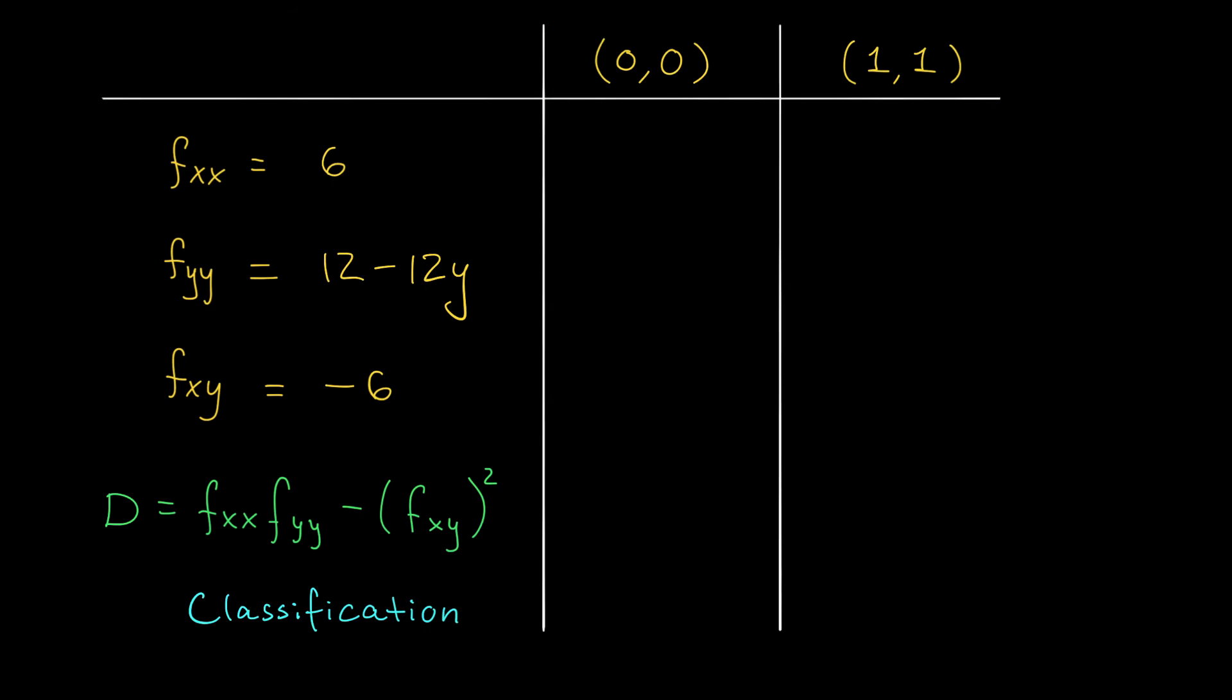Alright folks, let's apply that second derivative test. I like to summarize my information in a table like this. If you do this, the TAs are going to love you. It's very organized. Along the top, we have our critical points. And down the first column, we have the information relating to this d function. So what we're going to do is plug in our critical point to each of these quantities and see what the sign of this d function is at the end.